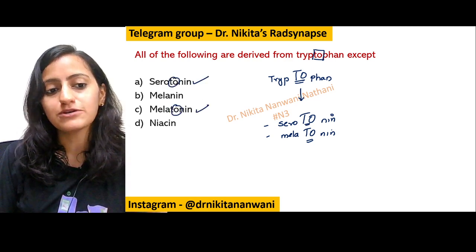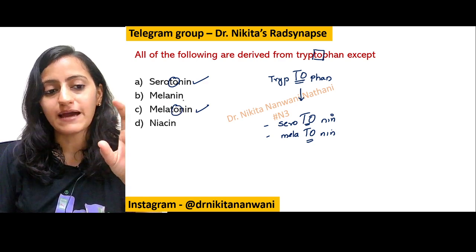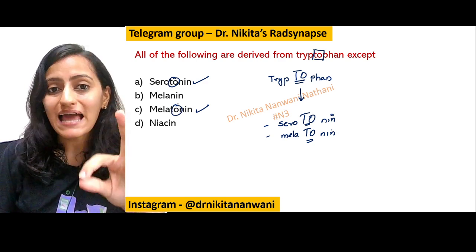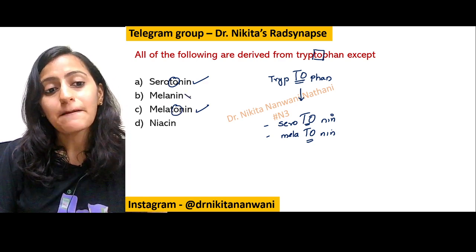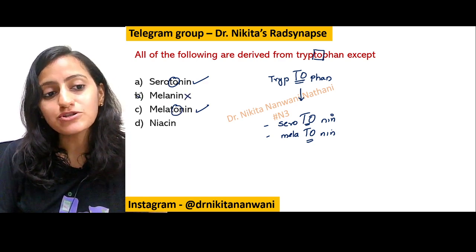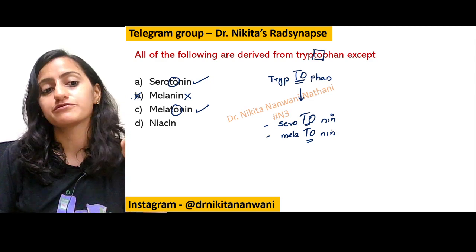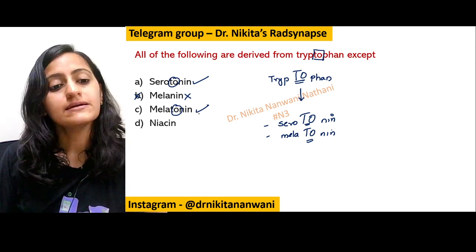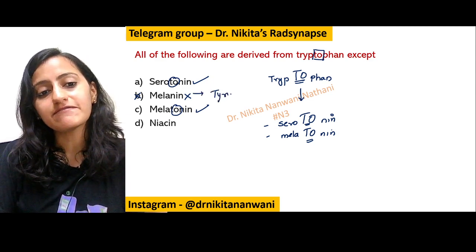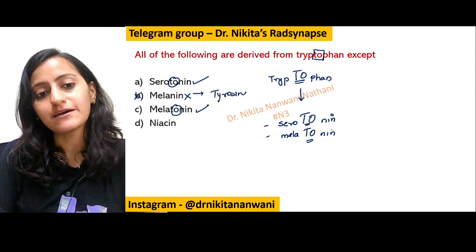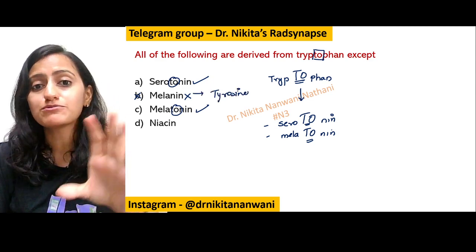The 'TO' and 'TO' of tryptophan give us melatonin — yes, melatonin is from tryptophan. Melanin, however, is not from tryptophan. Melanin is basically derived from tyrosine. We will come to this.